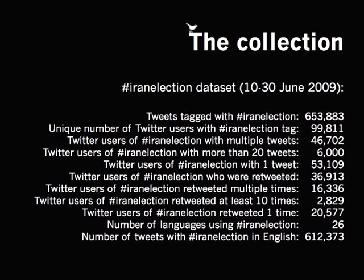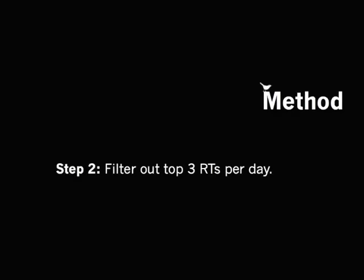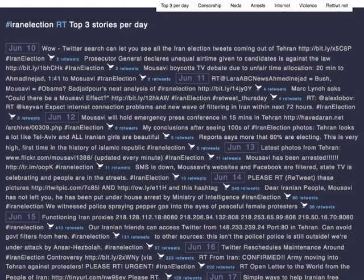You see also that there are quite a few number of unique users, something like 100,000. So in order to capture the substance of the Twitter space, we decided to filter it and take out the top retweets — those that have pass-along value per day. We organized them not in the reverse chronological order that Twitter uses, but we put them in chronological order starting from the 10th of June all the way up until the 30th of June.